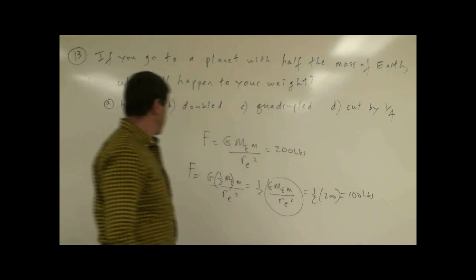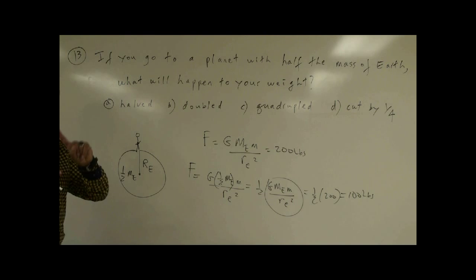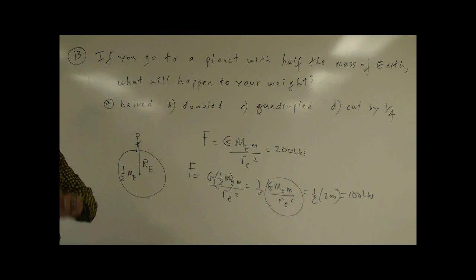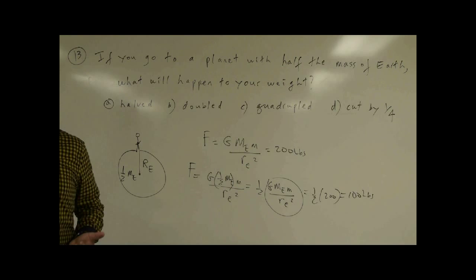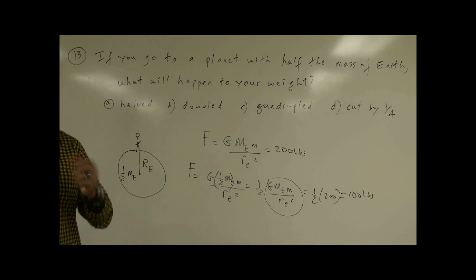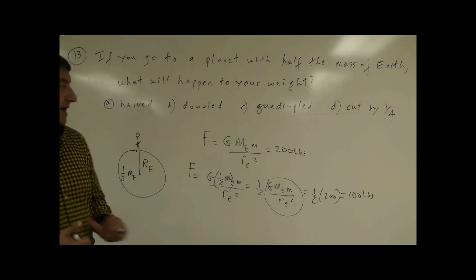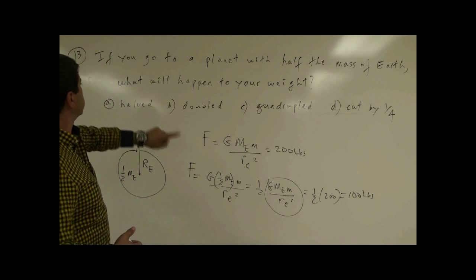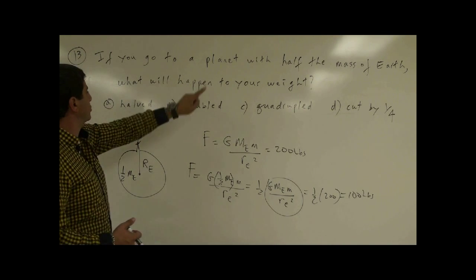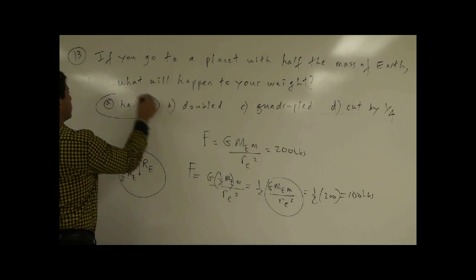So your weight on that other planet, which has the same radius as the Earth but half its mass, is going to be half as much — you will weigh 100 pounds. So if you go to a planet with half the mass of the Earth, what will happen to your weight? Halved. That is the answer.